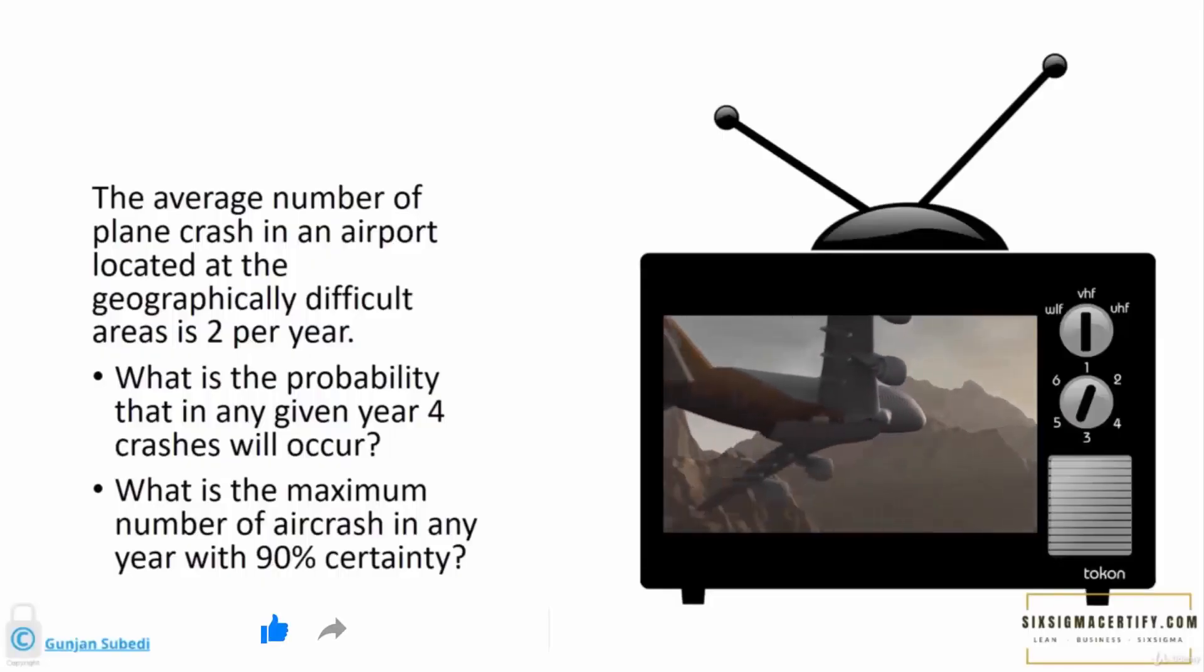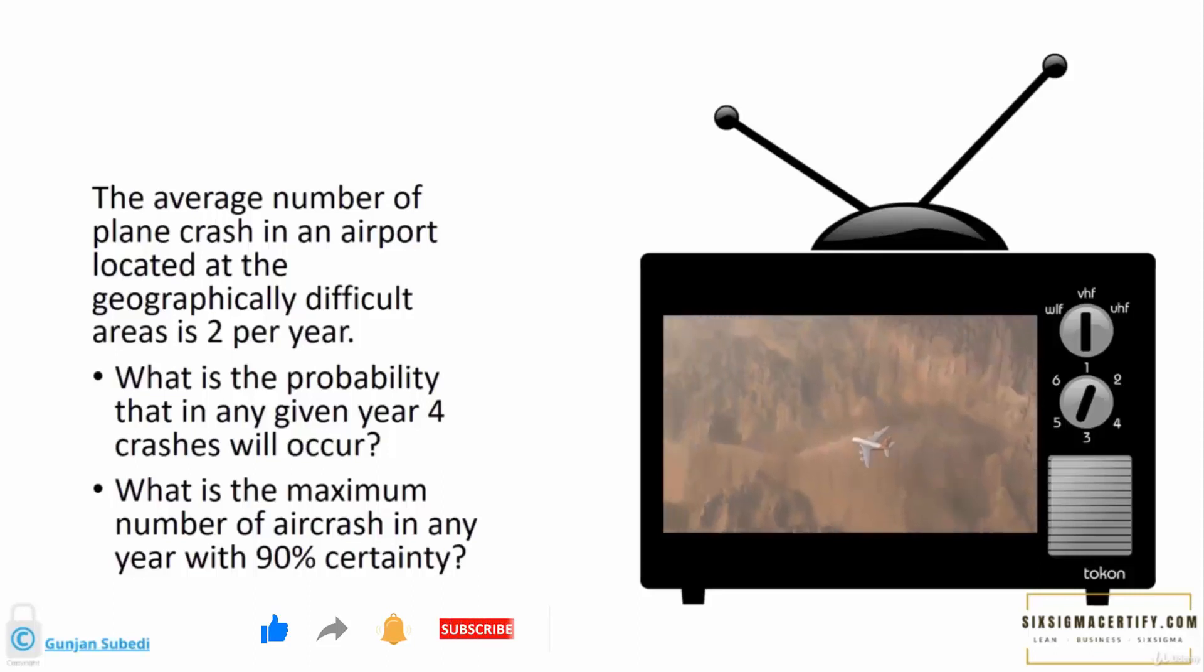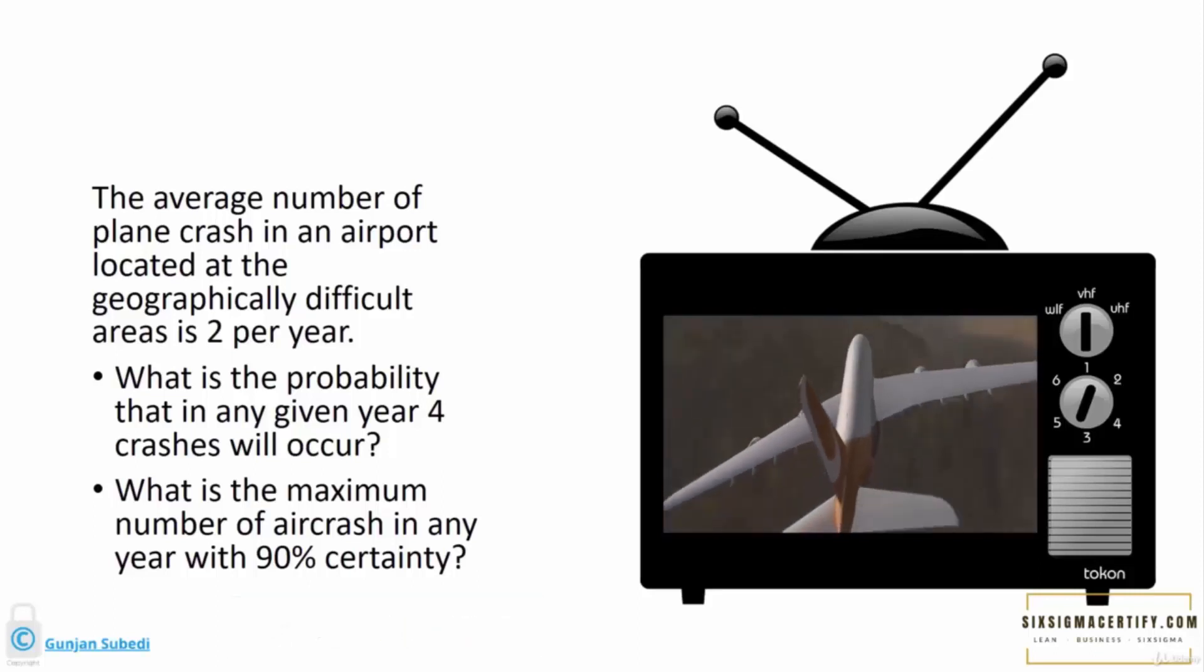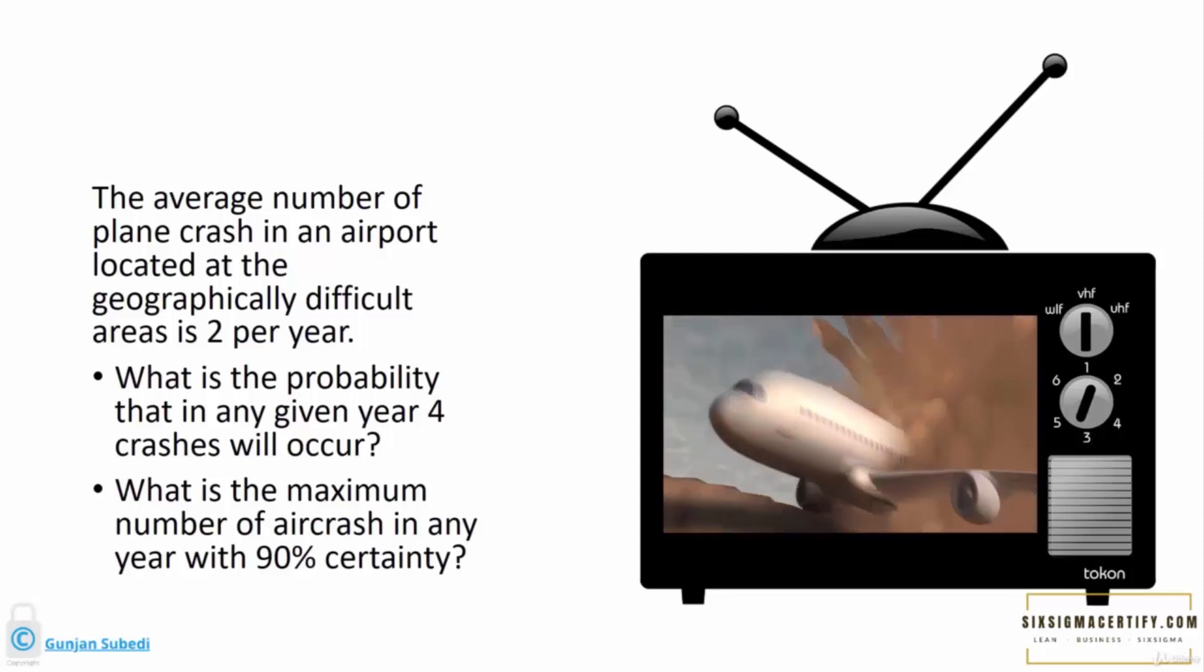Suppose the average number of plane crashes in an airport located at a geographically difficult area is two per year. We want to find the probability that in any given year four crashes will occur. We also want to find the maximum number of air crashes in any given year with 90% certainty.